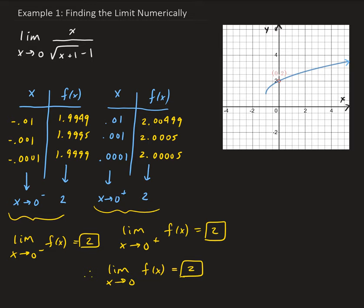Notice that the function value at x = 0 does not exist. If we plug x equals 0 into our function, we get what's called an indeterminate result — in this case, 0 over 0. So this is an example where the limit exists, but the function value does not exist at that point. f(0) does not exist, yet the limit still exists. The function value doesn't have to exist for the limit to exist.